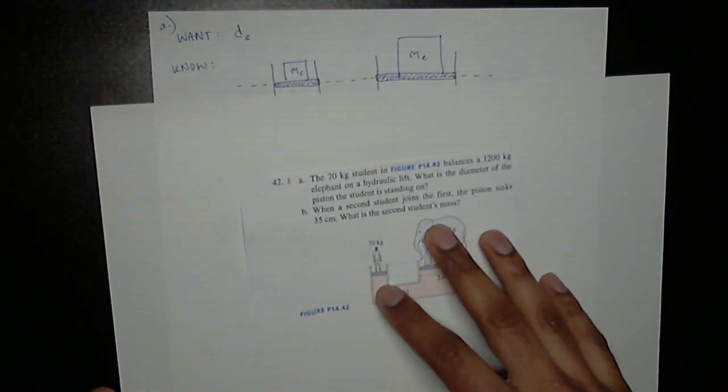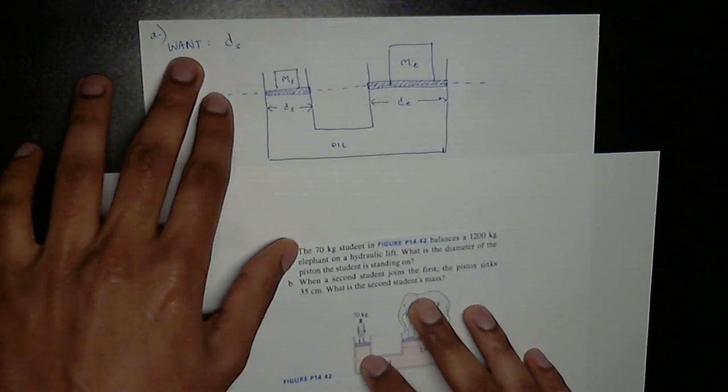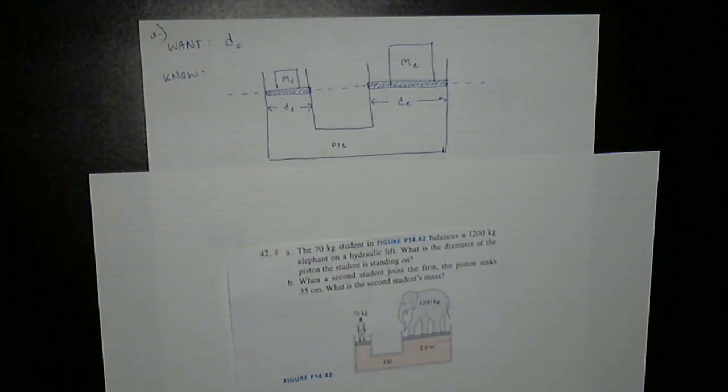What is the diameter of the piston that the student is standing on? So I started out strategy-wise how I always start problems. I wrote specifically what I want. In this case, the problem is asking for the diameter of the piston that the student is standing on. I'm going to use the symbol d subscript s for that.